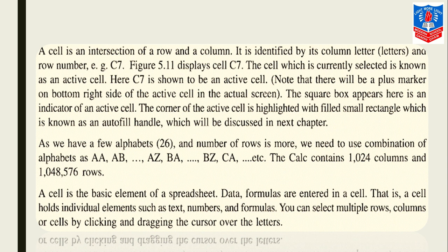As we have a few alphabets - the same alphabets, 26 - and the number of rows is more, we need to use combinations of alphabets: AA, AB, AC, AD till AZ, then BA till BZ, then CA till Z, AZ till ZZ. The Calc contains 1,024 columns and here you can see the number of rows: 1,048,576. These number of rows are there.